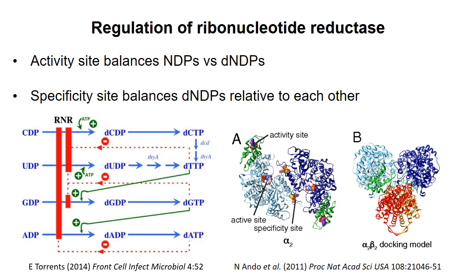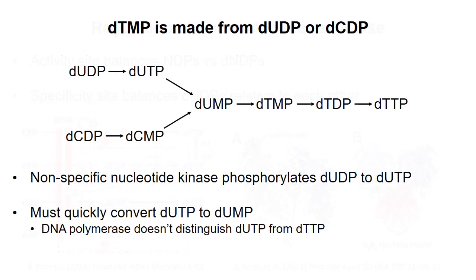Now we need to return to deoxythymine triphosphate. Since TDP does not exist in cells, how is this pyrimidine synthesized? Deoxy TDP is made from the other two pyrimidine deoxynucleotides. When dUDP is made, the nonspecific nucleotide kinase in cells will phosphorylate it to dUTP.